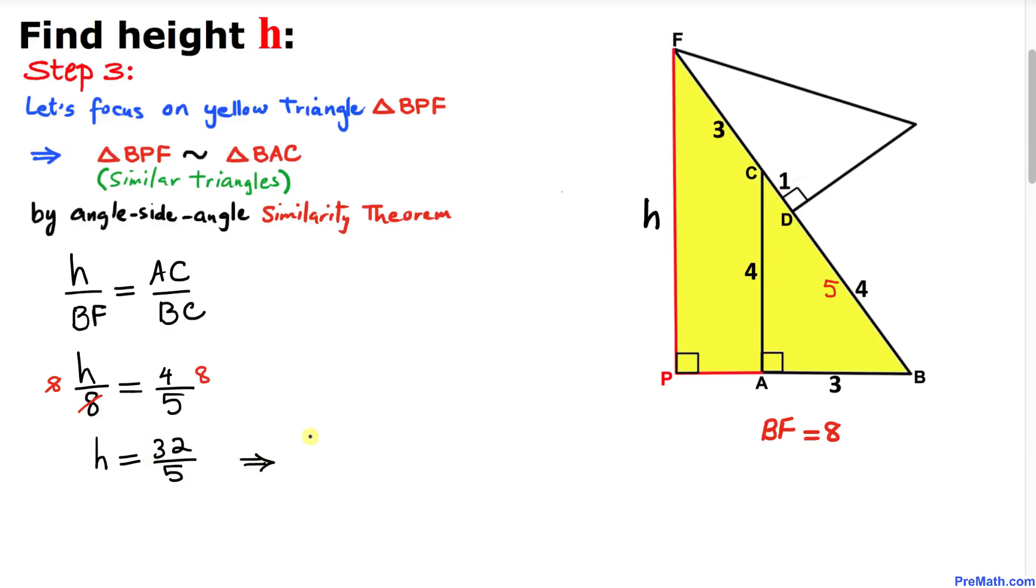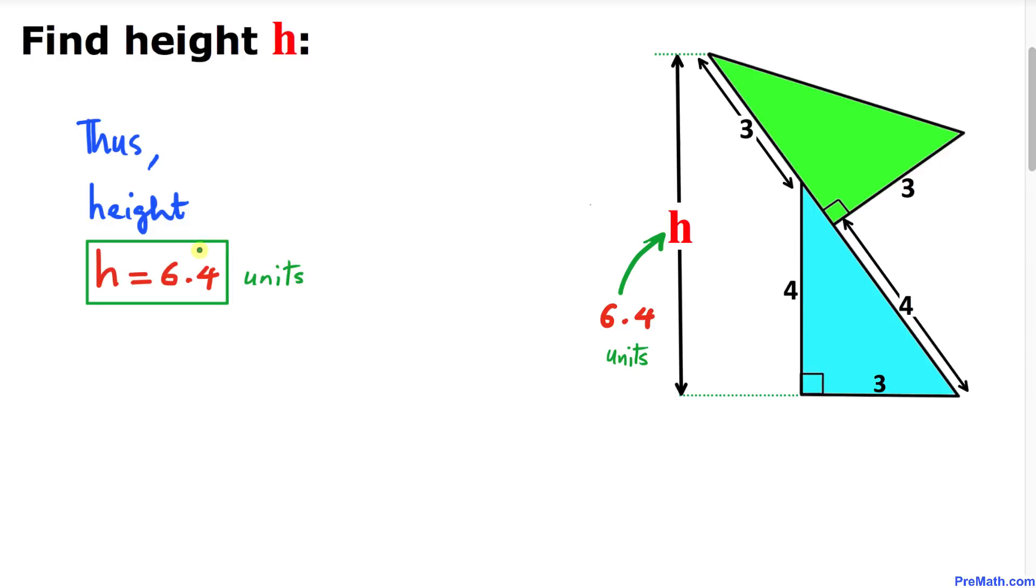That means our height h equals 6.4 units. Thus, our height h turns out to be 6.4 units, and that's our answer.